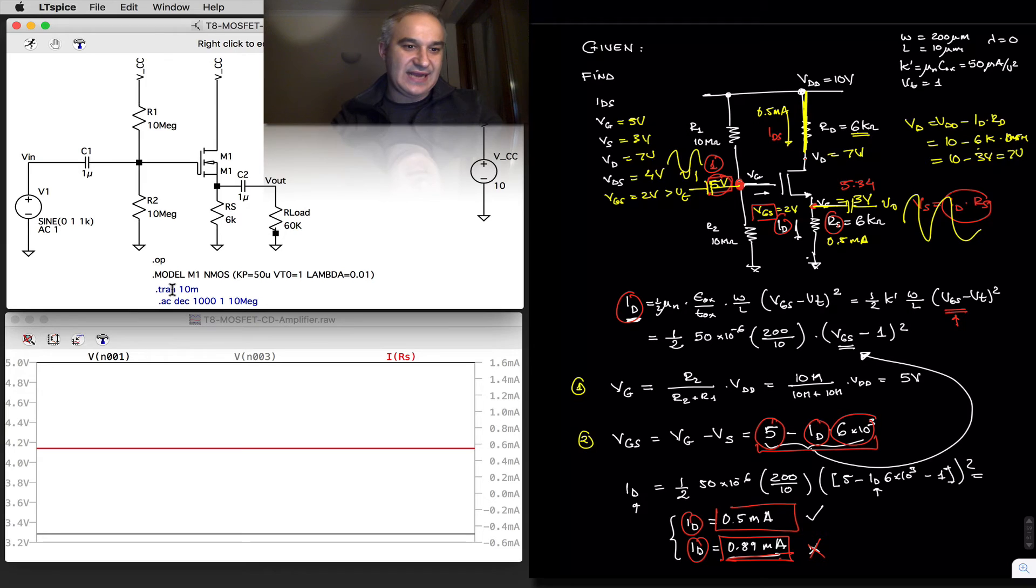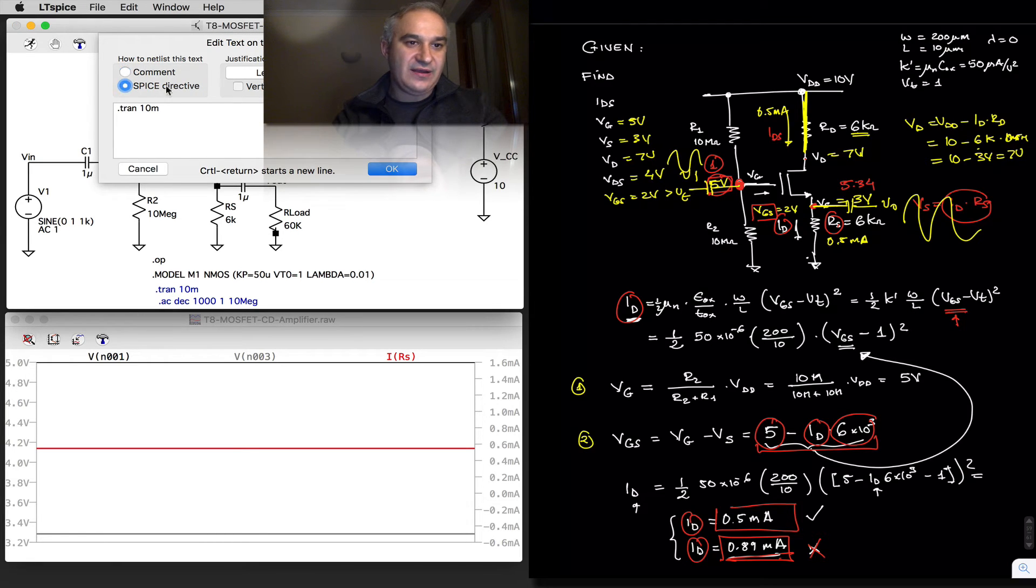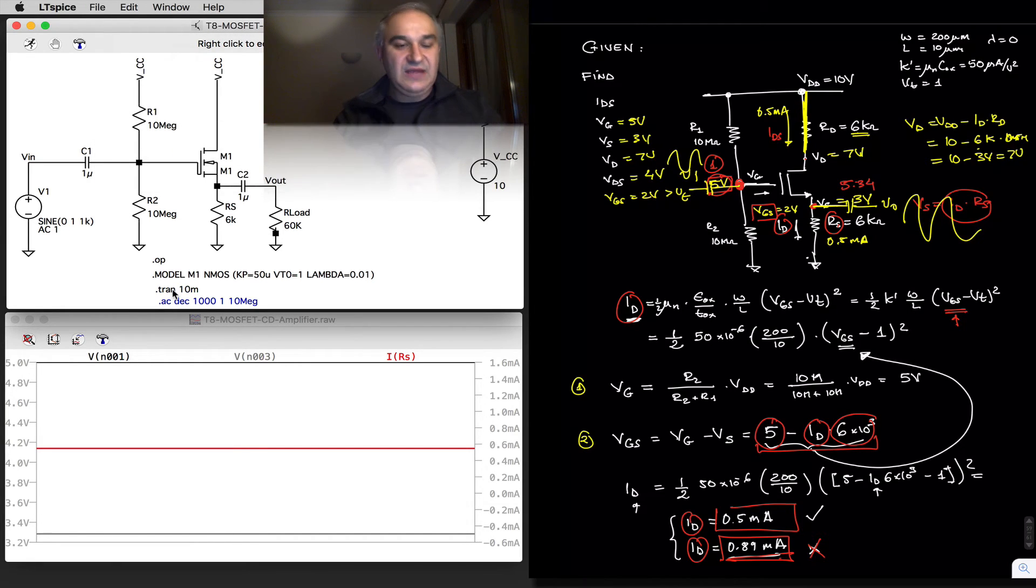Okay, so let's do a transient analysis and verify that if we take the output at the source, this is equivalent to the emitter-follower in BJT technology, or the common collector amplifier, meaning the input is at the gate, the output is at the source, we have no gain. In fact, we lose a little bit of gain. It's less than 1.